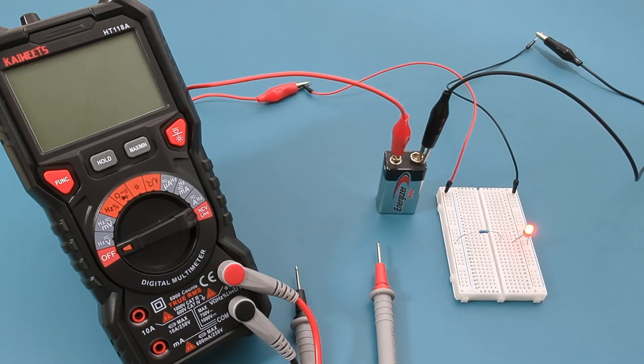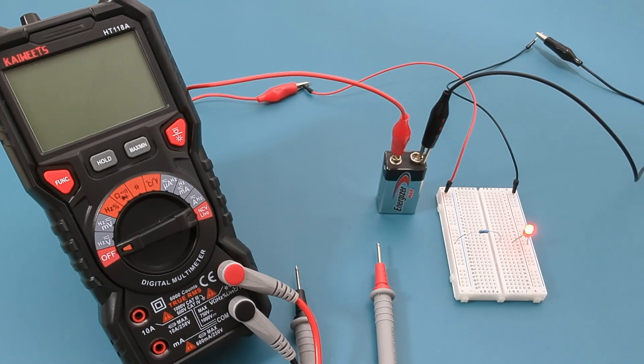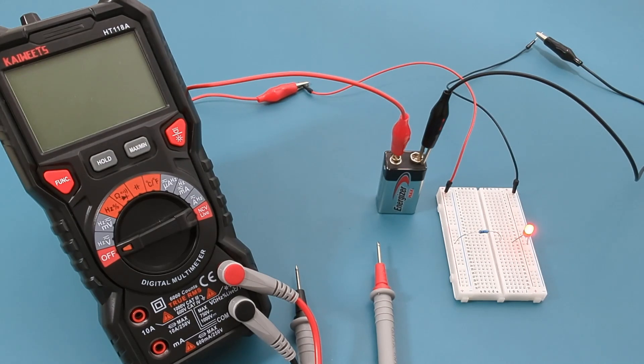When the current flows from the battery through the resistor, the voltage drops by 7 volts. This drop signifies that the resistor has used up 7 volts of electric potential to resist the current flow. The remaining 2 volts continue to flow through the circuit.